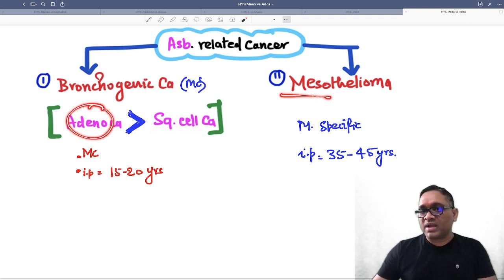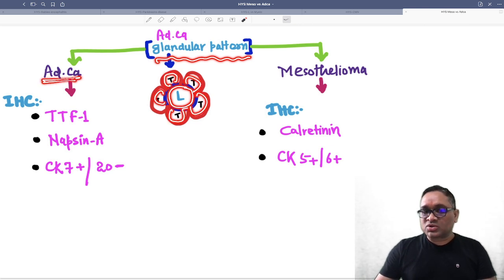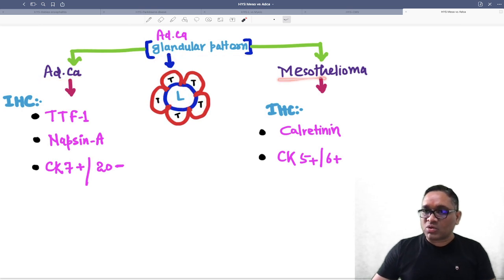Adenocarcinoma and mesothelioma can be confused because of their common histological pattern called glandular pattern, which means there is a lumen surrounded by tumor cells. This pattern is seen in both adenocarcinoma and mesothelioma.